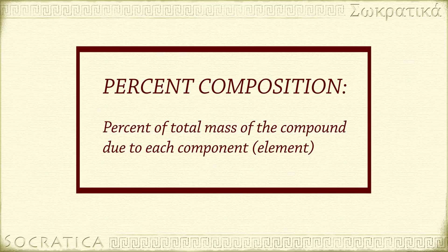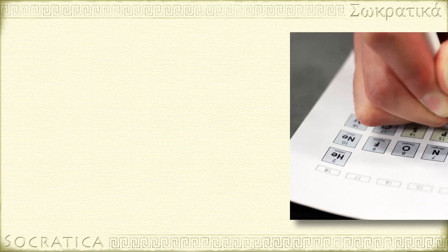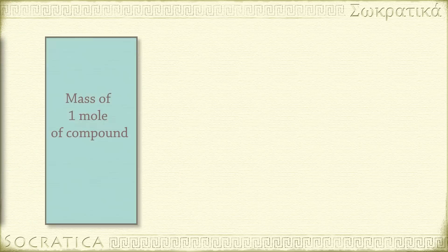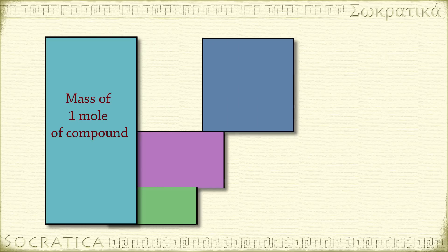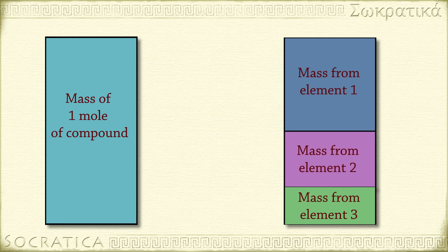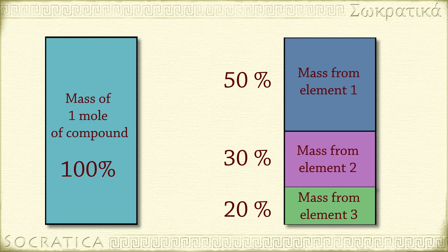The atoms of each element weigh different amounts, so we need to look at the periodic table to find the percent composition by mass. We'll calculate the mass of a mole of the compound, as well as the mass due to each element in the compound. If you add up the percent compositions for all the elements in a compound, it should sum to 100%. Let's do this for water.